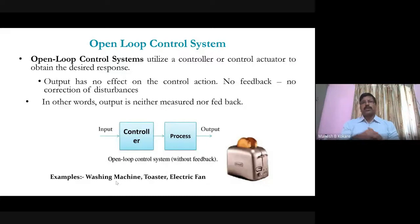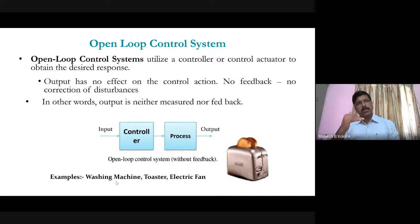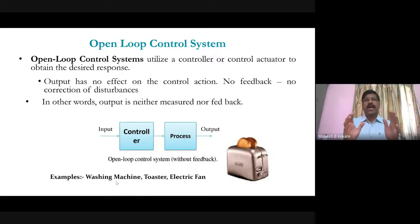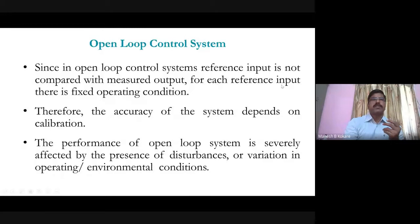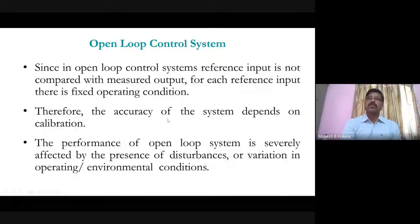We'll compare open-loop and closed-loop control systems in detail shortly, but first let's understand each individually. In an open-loop control system, the reference input is not compared with the measured output — there is no feedback. For each reference input, there is a fixed operating condition. The accuracy of the system depends on calibration — if the controller is properly calibrated, there are chances of getting accurate results; if not, the output may be wrong.